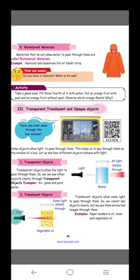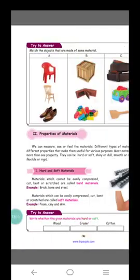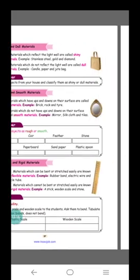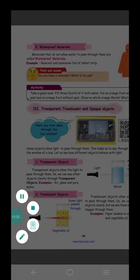These are the properties of materials: hard materials, soft materials, shiny and dull materials, rough and smooth materials, and flexible and rigid materials. That is the next class. I will share more. Thank you, children.